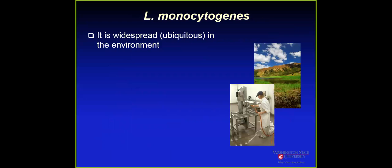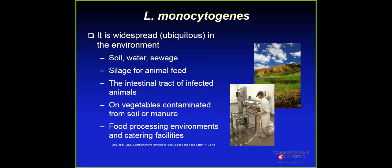Why do we care about Listeria? Because Listeria is widely spread in the environment — we can find it in soil, water, sewage, animal feeds, animal sheddings, intestinal tract, and it can also be found in vegetables growing in contaminated soils. It's also pretty universally found in processing environments and catering facilities.